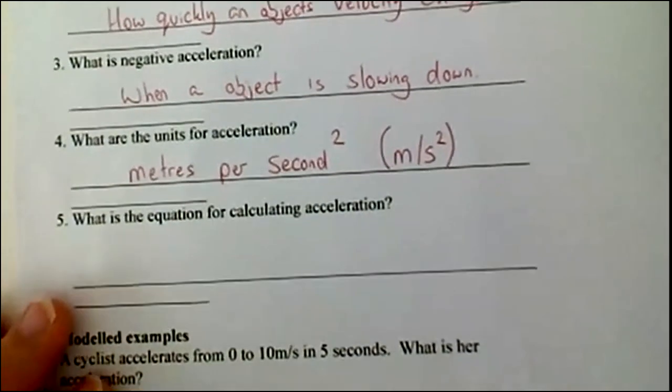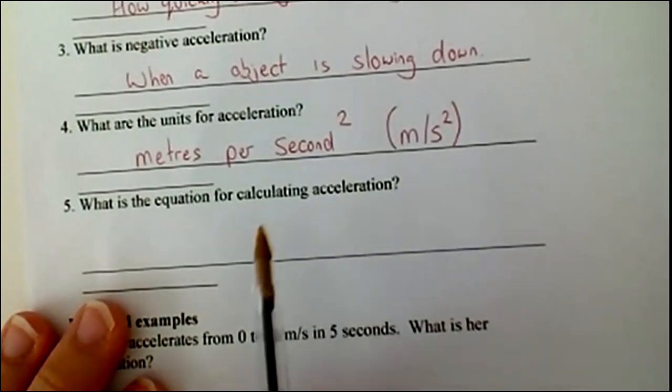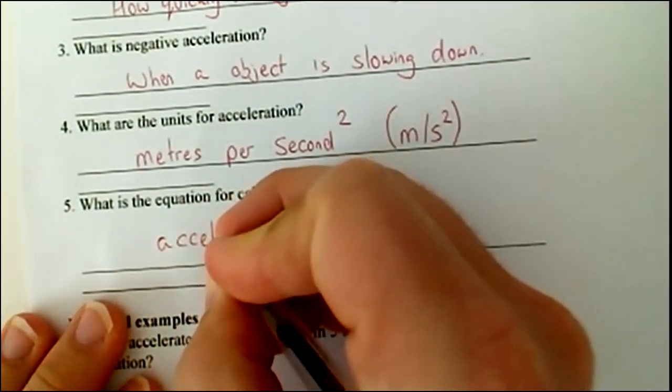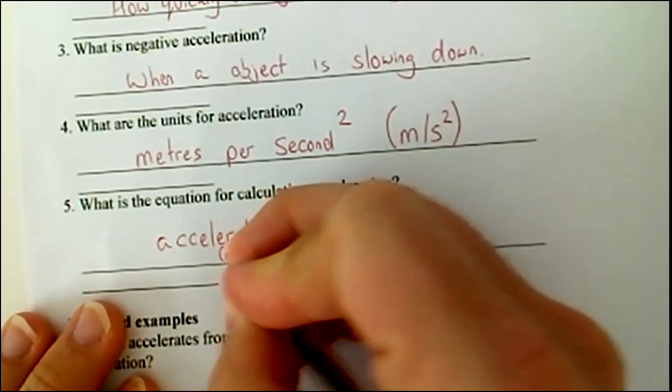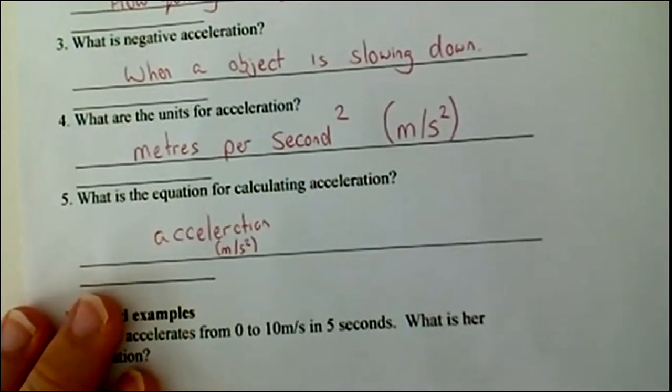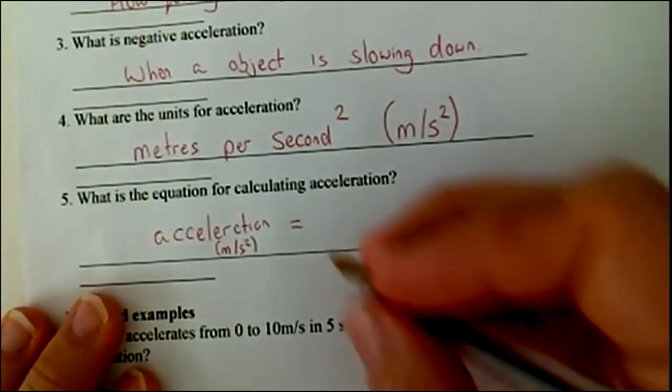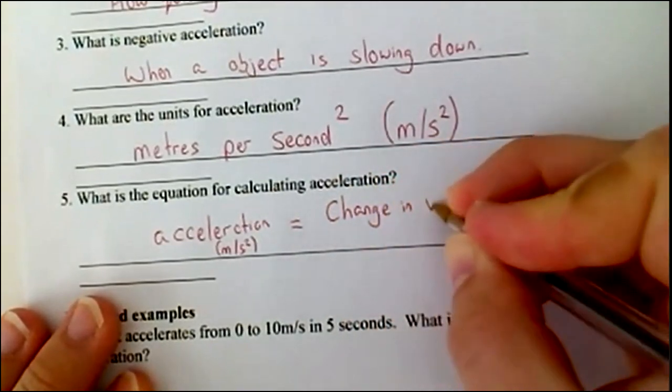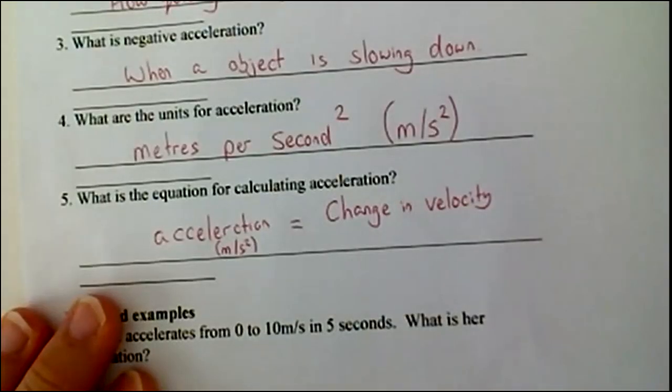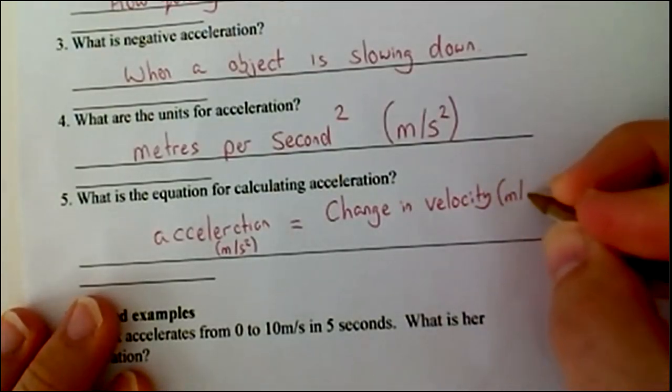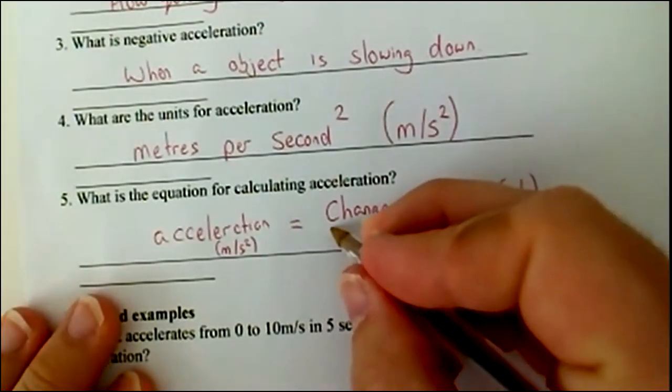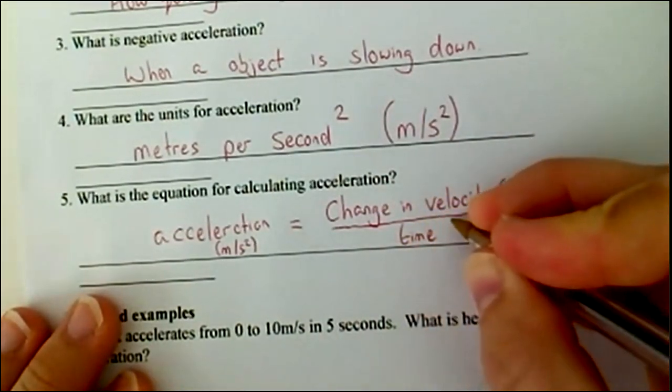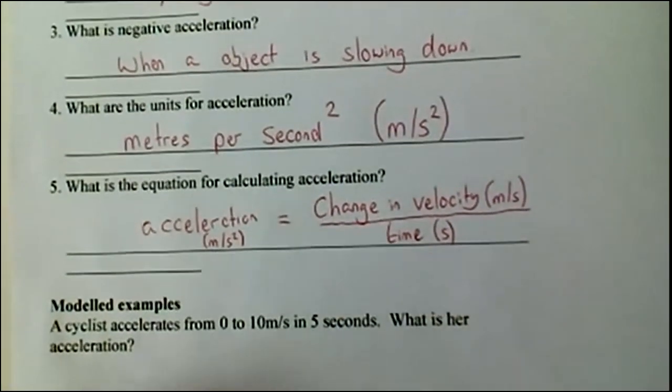So, the final new bit of knowledge for you is the equation for calculating acceleration. Now, again, it's a very math-heavy topic. Now, acceleration, to calculate it, what we need to do is we need to know two things. The first thing is the change in velocity, and we know that is the speed. So, the unit is metres per second. And we need to know also how long that change took. So, time for that change to happen, and time, as we know, is measured in seconds. That is the equation you need to know.